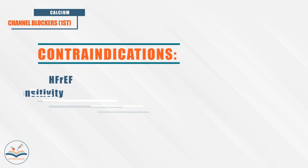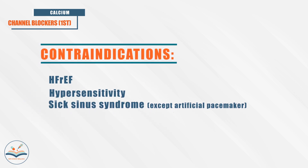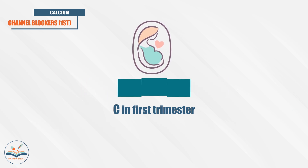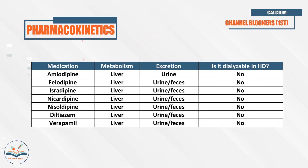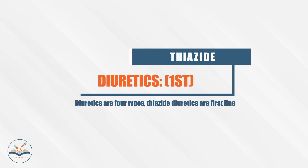Calcium channel blockers are contraindicated in heart failure with reduced ejection fraction, hypersensitivity reaction, and sick sinus syndrome. They are category C during pregnancy. They are metabolized by the liver and excreted by urine and feces, and they are not dialyzable.